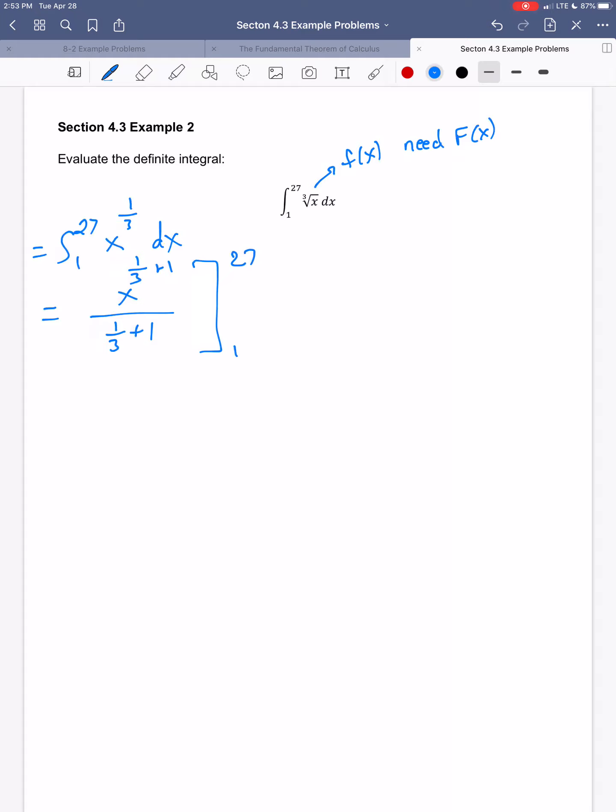So 1 is the same thing as three-thirds, right? So one-third plus one is one-third plus three-thirds, so that would be four-thirds.